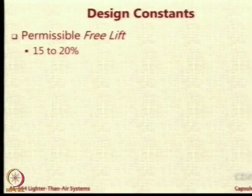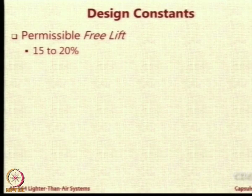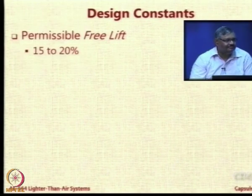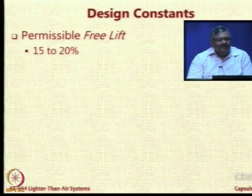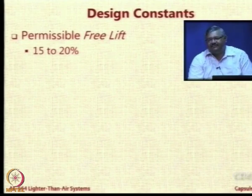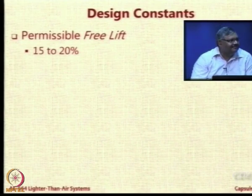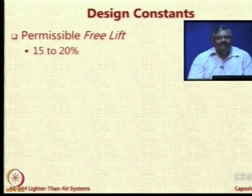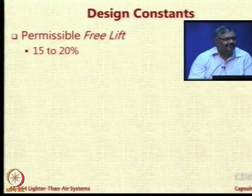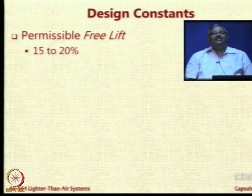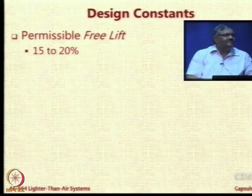Then there are some constants. This is a very important parameter and this is the most misunderstood parameter, so all of you pay attention. There is something called as free lift. Nothing comes free — you have to have an envelope volume to get the lift — but what is this free lift and why is the value 15 to 20 percent?